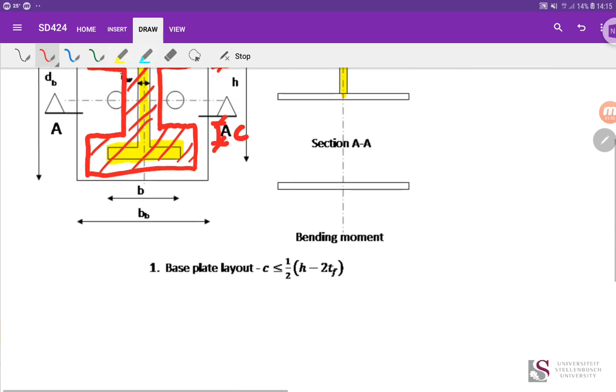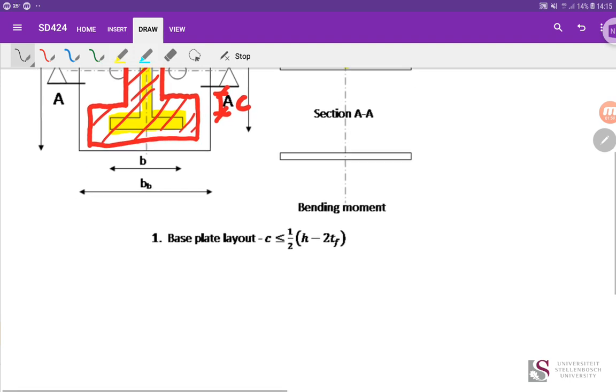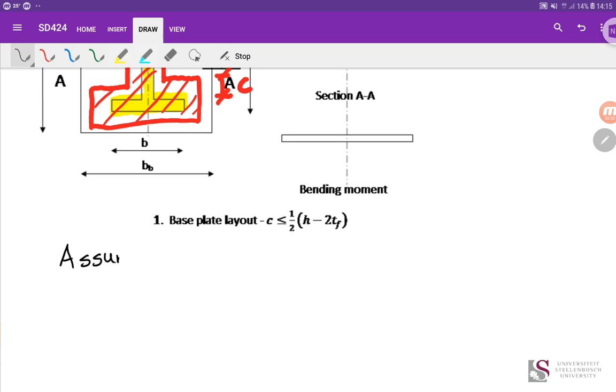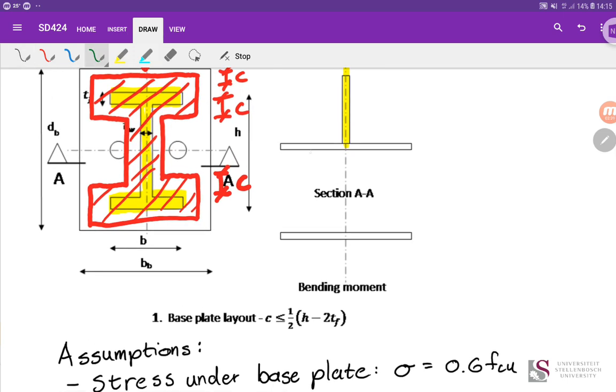So looking at it I'm going to start now with the calculations and firstly there's a couple of assumptions we're making in this calculation. So my assumptions are the stress under the baseplate is 0.6 FCU. Stress under baseplate is 0.6 FCU. And it's either that or nothing. So what that'll look like in a diagram is, for instance this is a section, I would have a rectangular stress block under the column like that and then this is 0.6 FCU under the baseplate and then it suddenly goes to 0 outside of that.